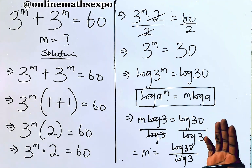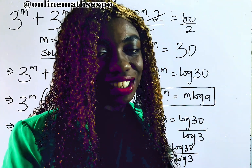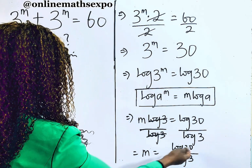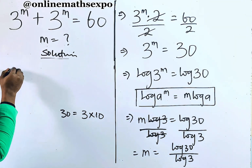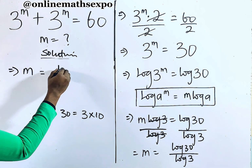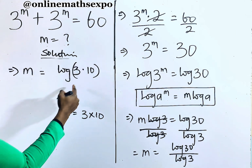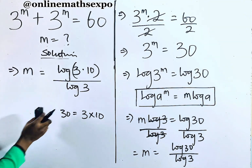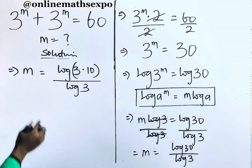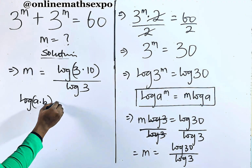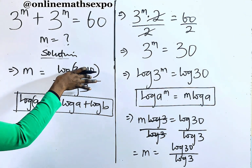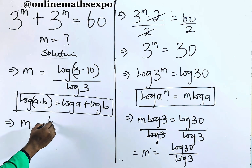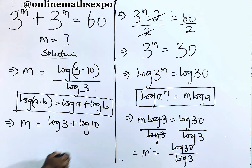Do you intend to leave it at this point? No, it's not yet simplified. Let's simplify this together. Remember that 30 can be expressed as 3 times 10, so we replace this: m is equal to log of 3 multiplied by 10, divided by log of 3. This gives us 30 divided by log of 3. Now remember, for every log of a multiplied by b, it's always log of a plus log of b. We apply this rule on the numerator to have m is equal to log of 3 plus log of 10, divided by log of 3.